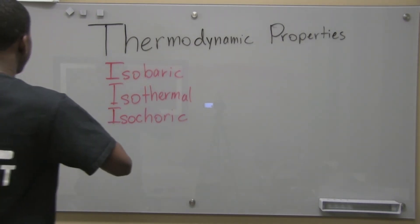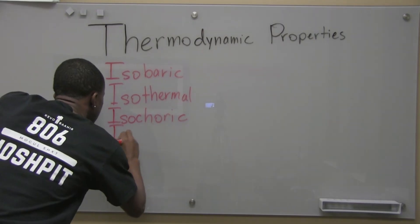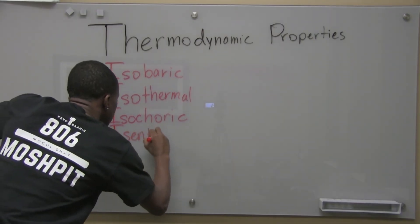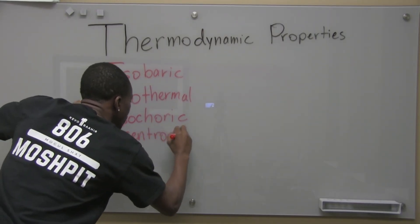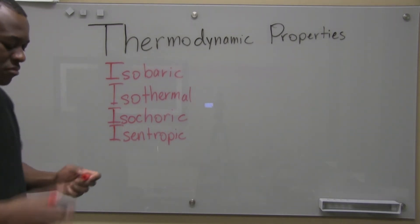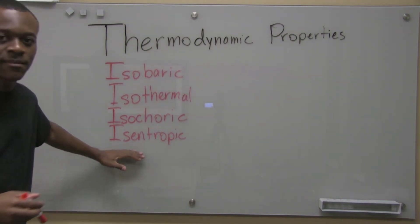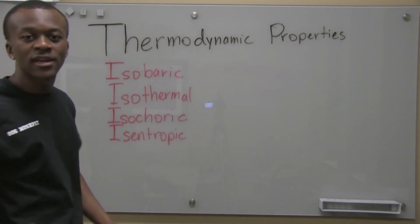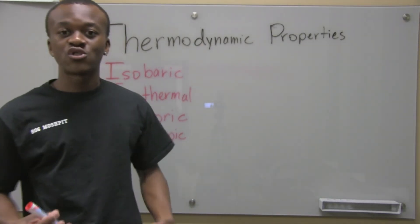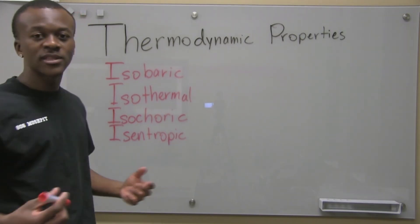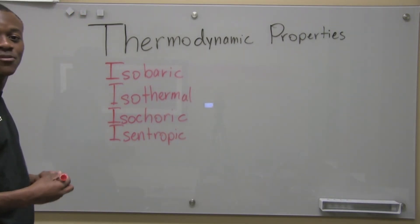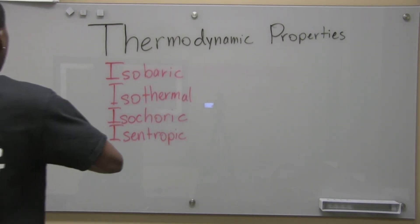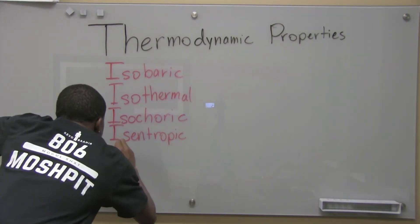We also have isentropic. Now what does isentropic mean? Iso, again, same. Entropic. There's something as a value called entropy. So we're going to learn about that later. But isentropic means that the entropy stays the same in this. And then we also have something called adiabatic.